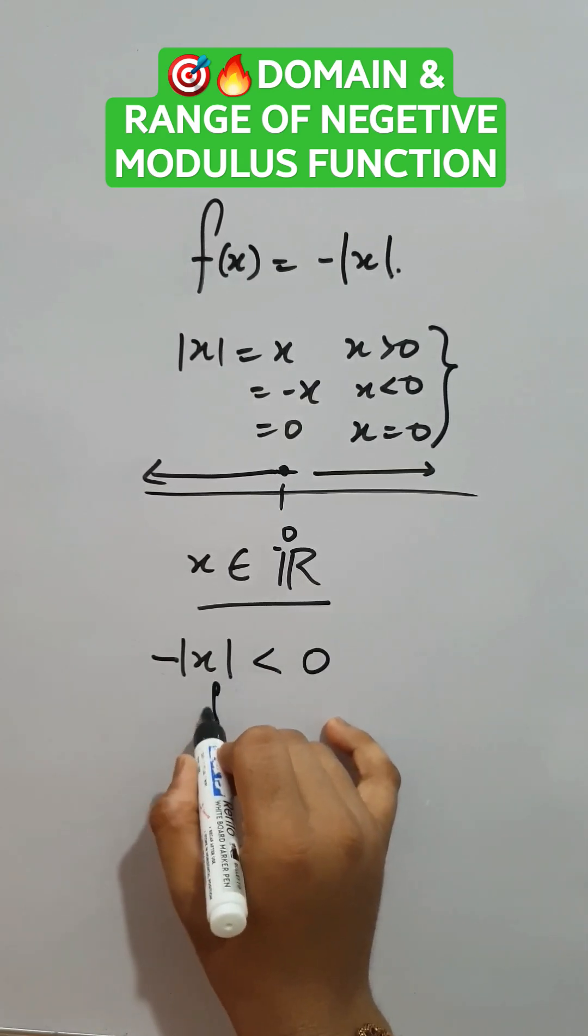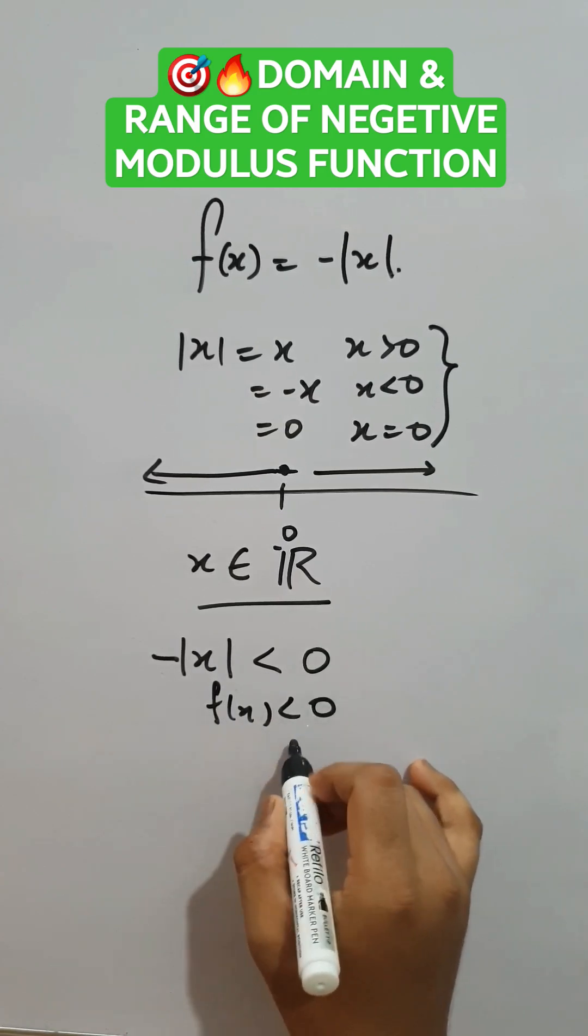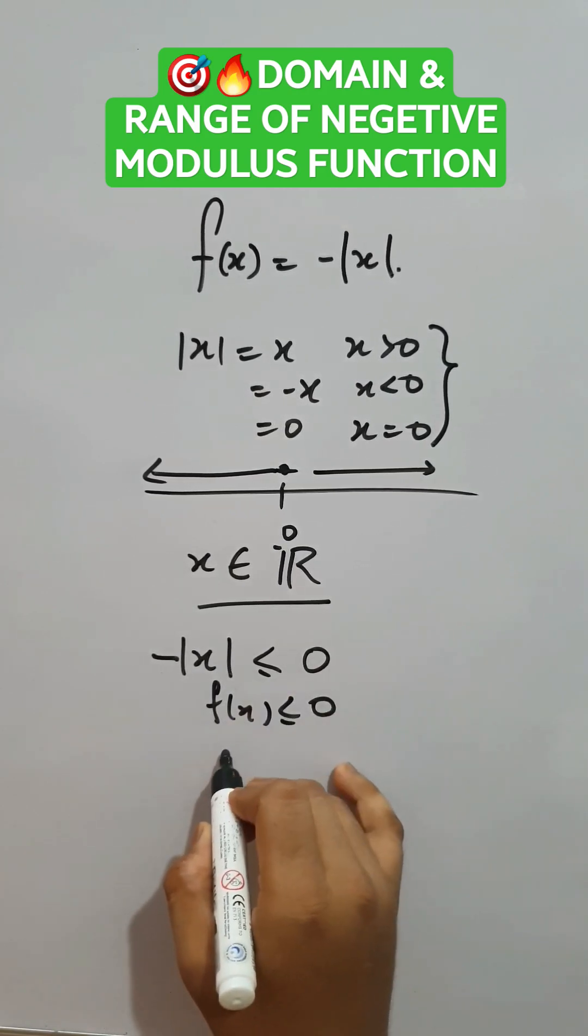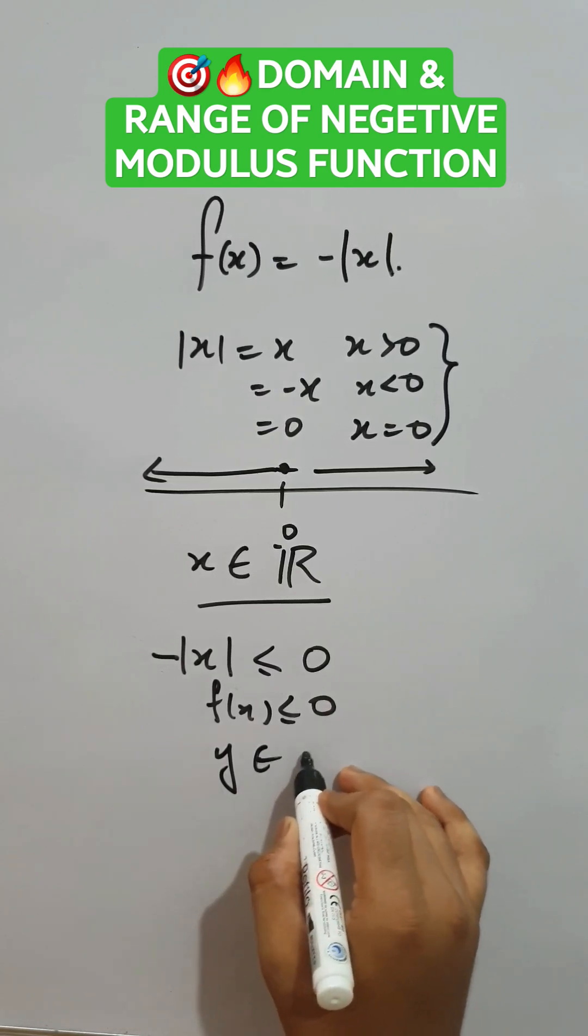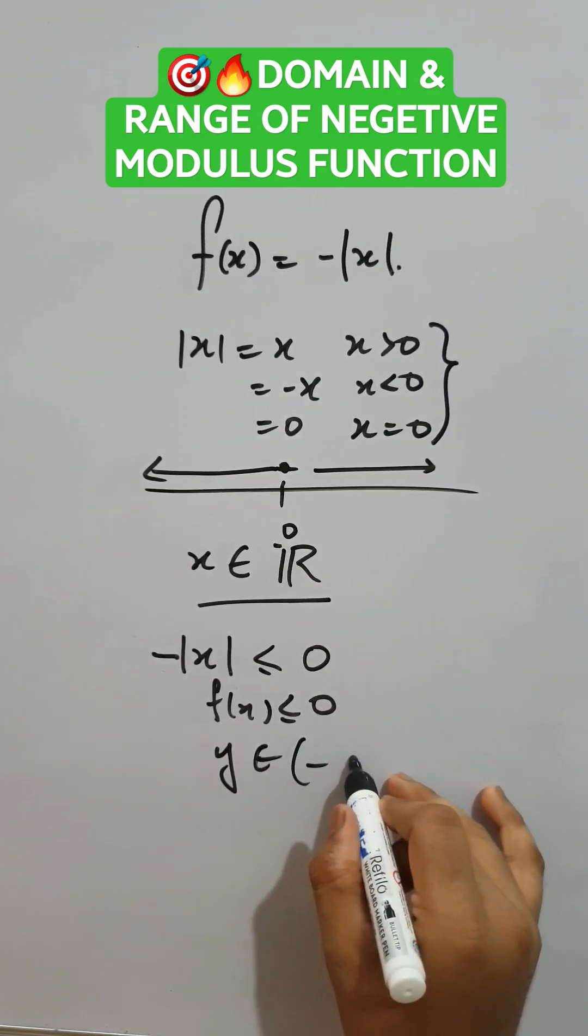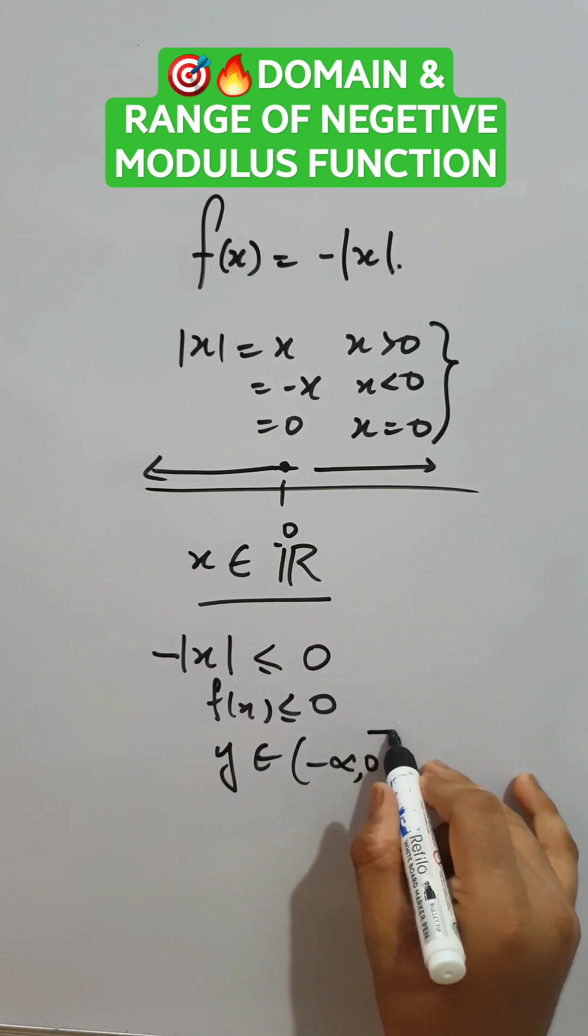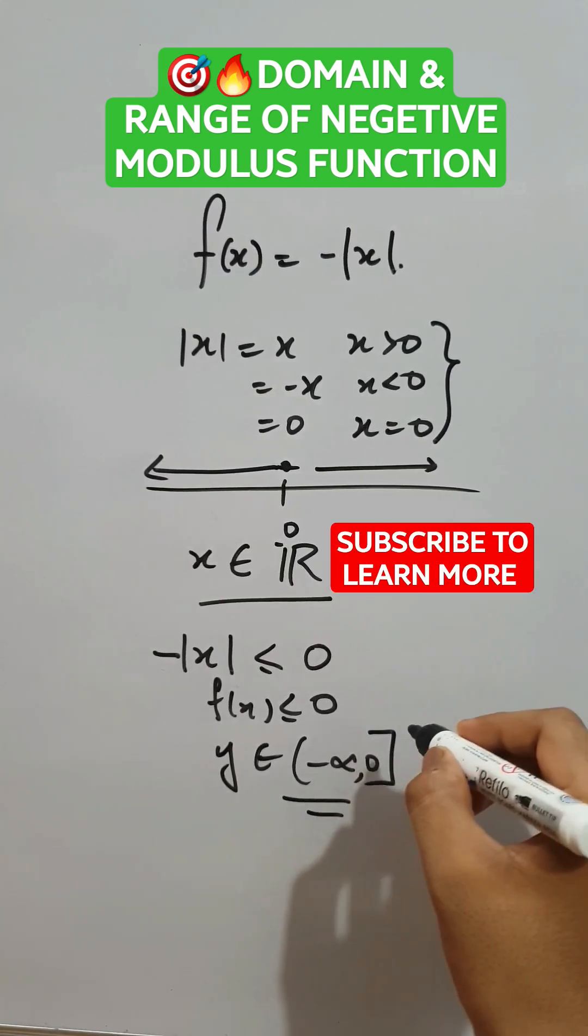it is less than 0. So f of x is always less than or equals to 0. So y, that is f of x, belongs to minus infinity to 0 closed. This is the range of the given function.